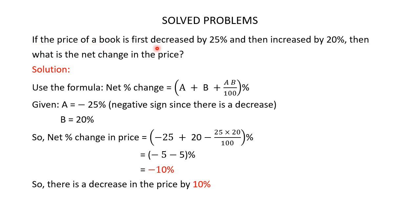Problem: If the price of a book is first decreased by 25 percent and then increased by 20 percent, what is the net change in the price? Use the formula: net percentage change = a + b + (ab/100) percent. The price is first decreased by 25 percent, so a = −25, then increased by 20 percent, so b = 20. Net percent change = −25 + 20 + (−25 × 20)/100 = −10 percent.